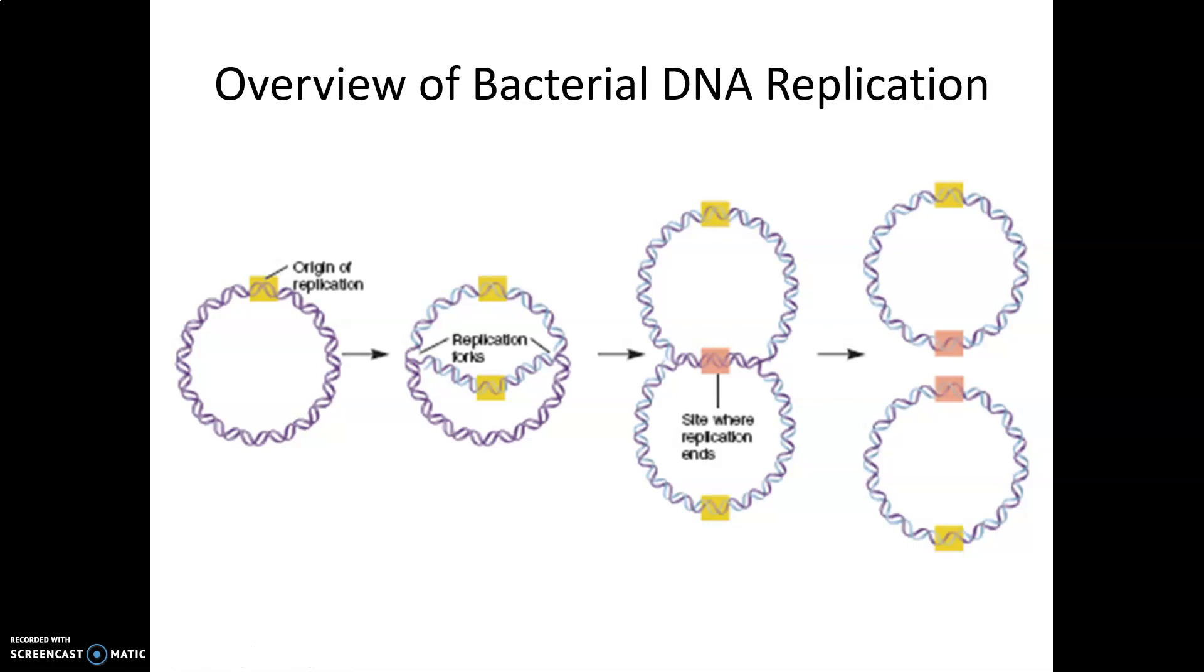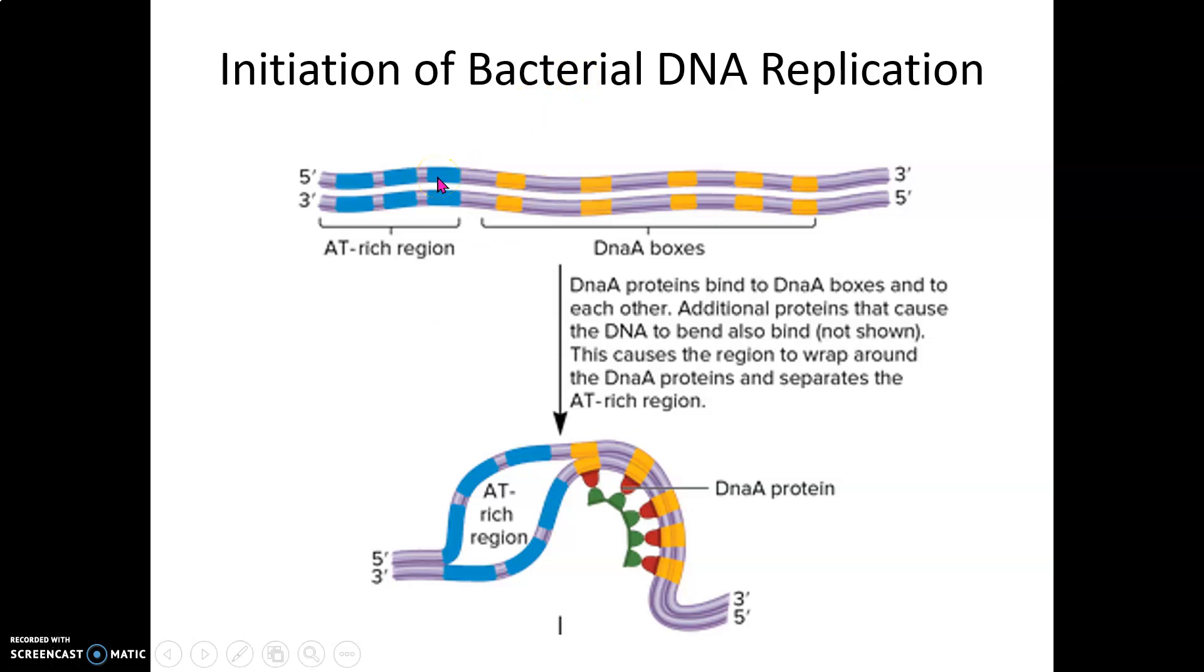Within that origin of replication, you'll find an AT-rich region and DnaA boxes. The AT-rich region precedes the origin of replication because it's easier to pull A and T apart compared to C and G. This is because A and T have two hydrogen bonds, while C and G have three hydrogen bonds.